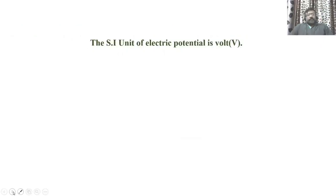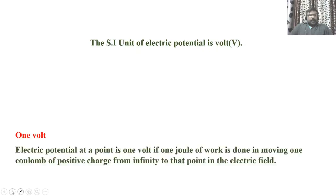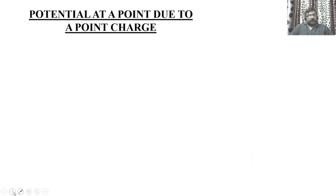The SI unit of electric potential is volt, and actually volt is joule per coulomb. We define one volt as follows: electric potential at a point is one volt if one joule of work is needed to bring a unit positive charge from infinity to that point in that electric field.